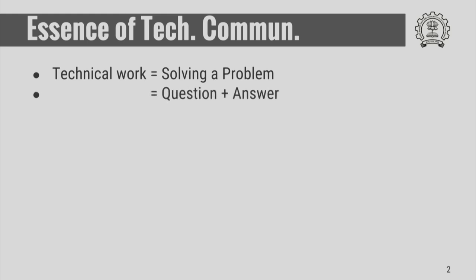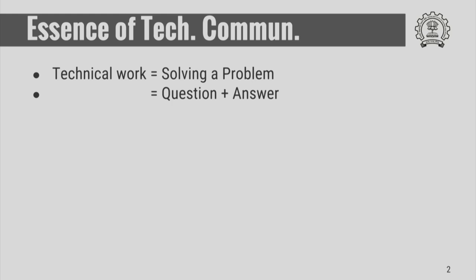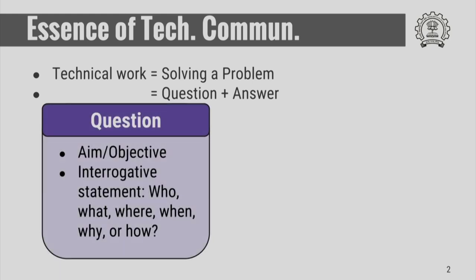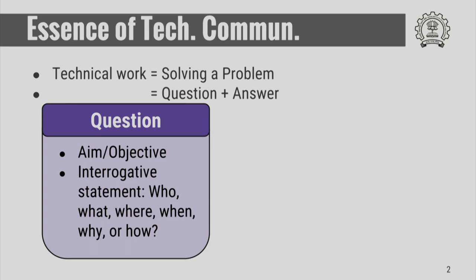The question and answer can be structured in the following way. The question, which is also sometimes called an aim or an objective, is essentially an interrogative statement — a statement in which you have some questioning word such as who, what, where, when, why, or how.